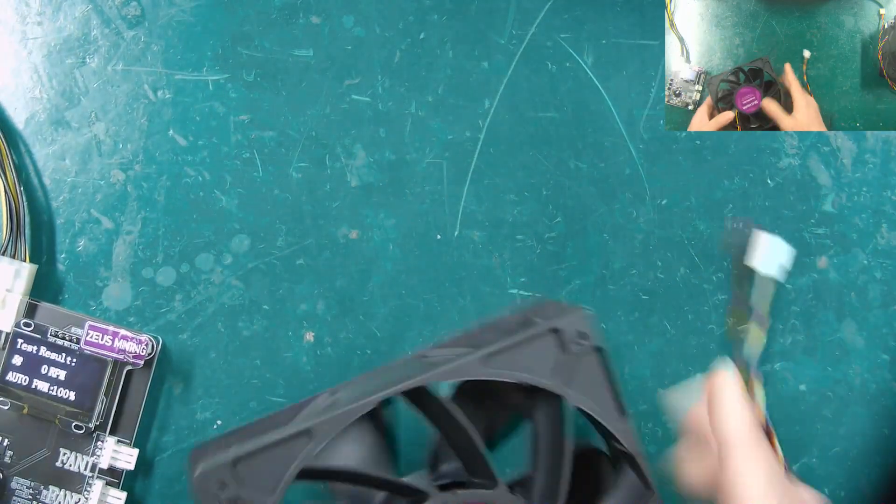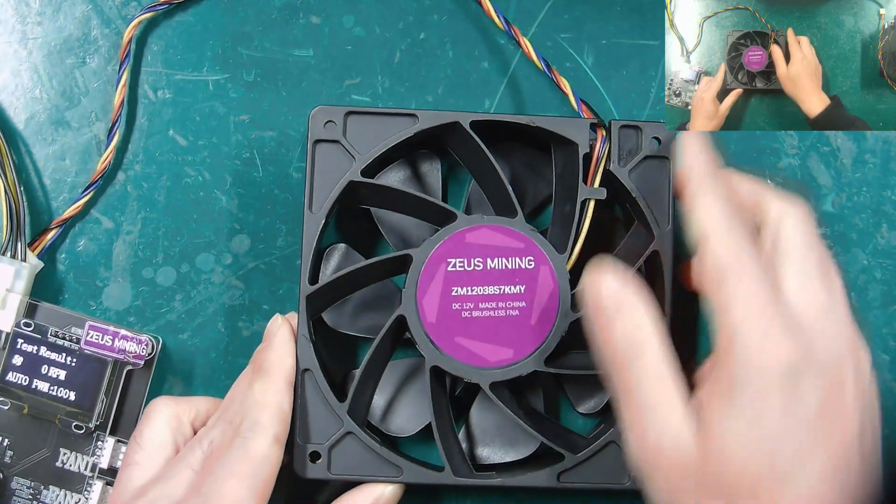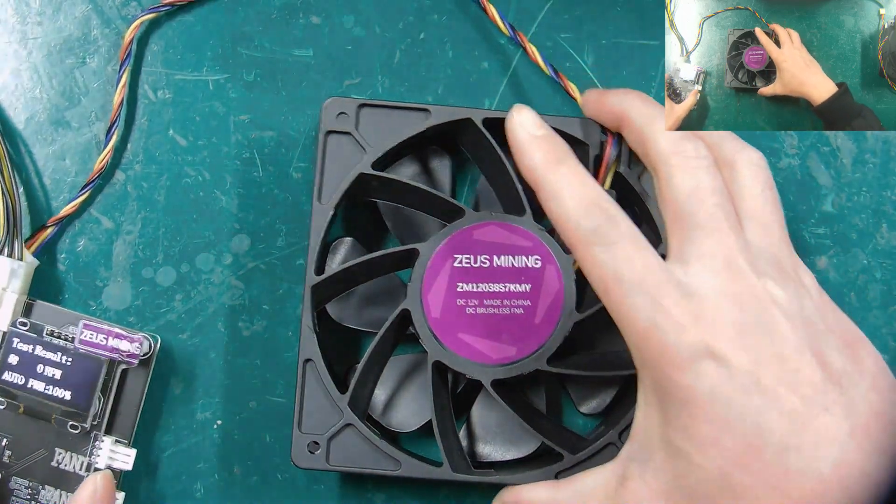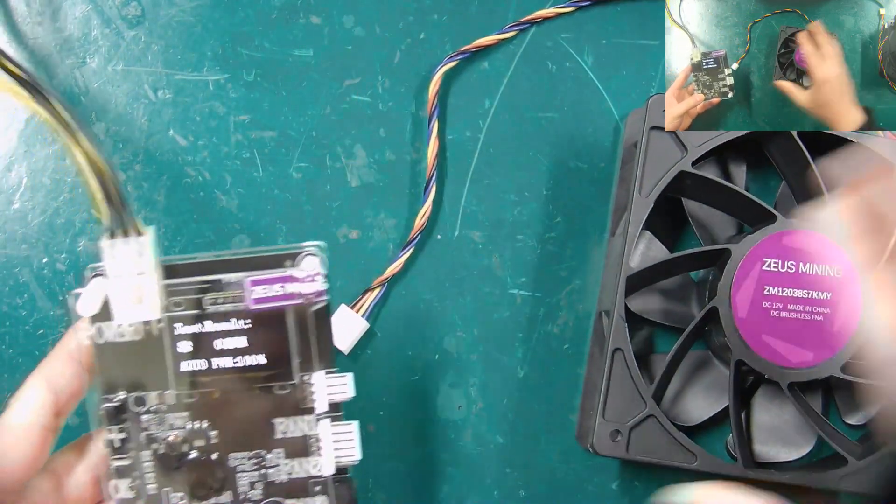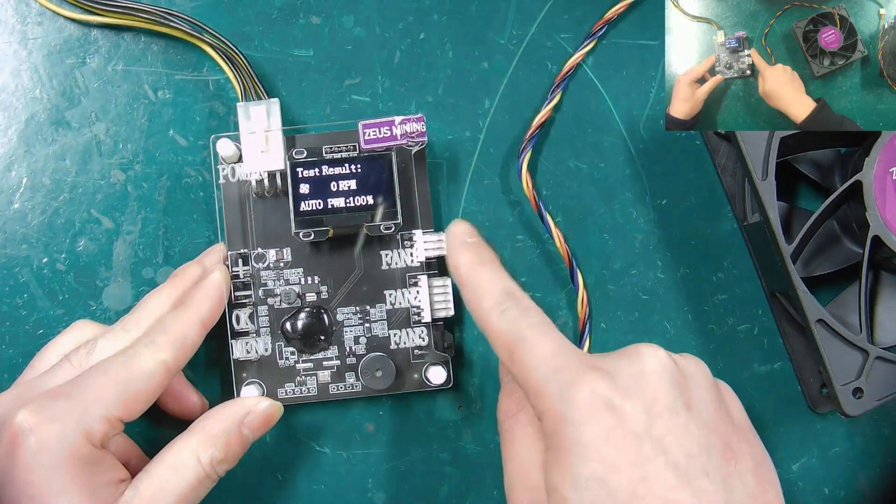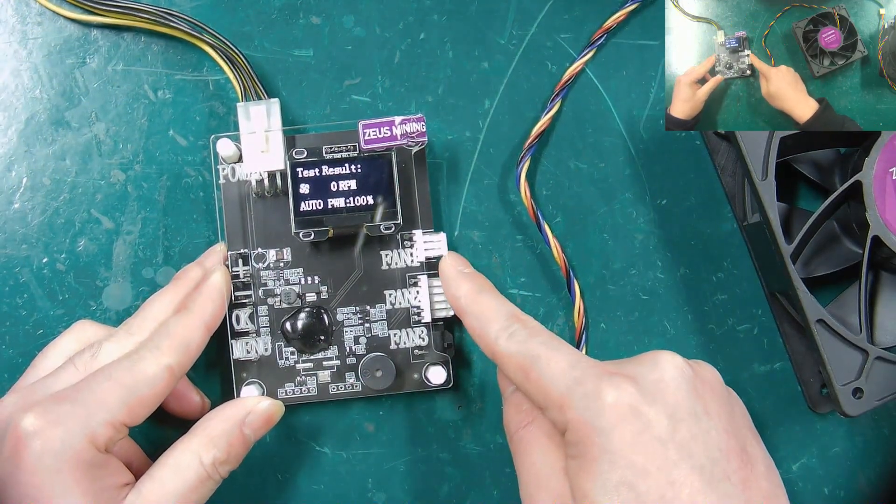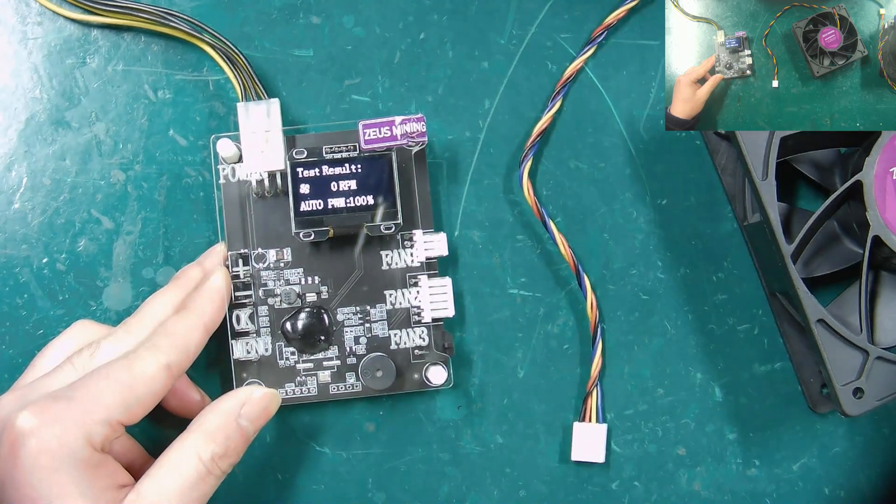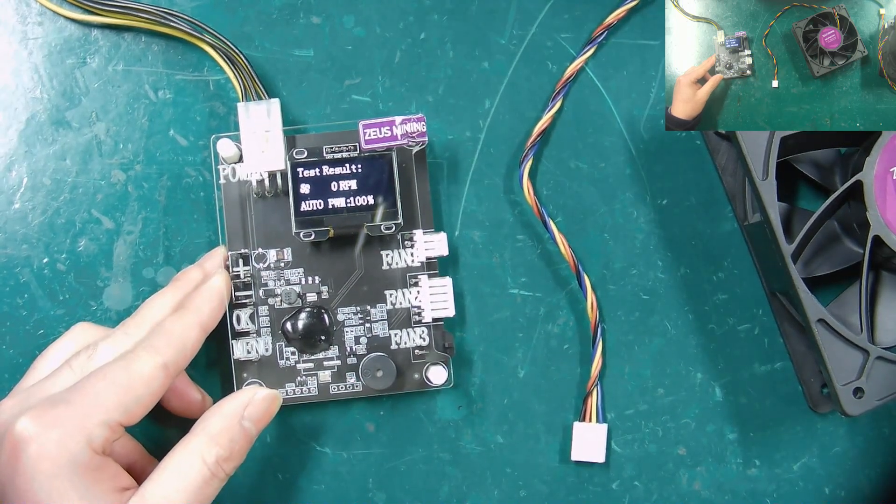The first one, Antminer 7,000 RPM miner fan. Attention, when using the F1 tester to test the miner fan, only one fan can be connected each time, and multiple fans cannot be inserted at the same time, otherwise the tester will be damaged.